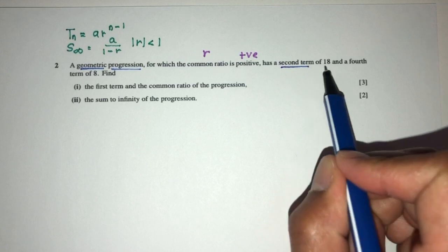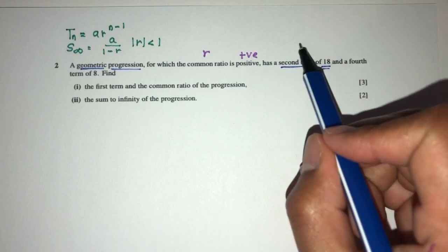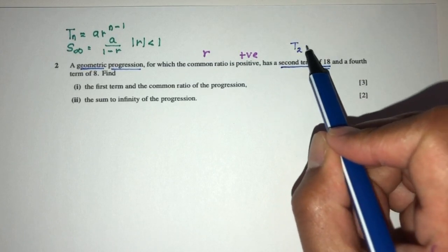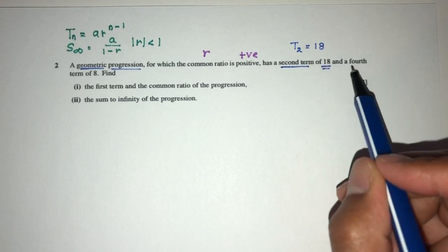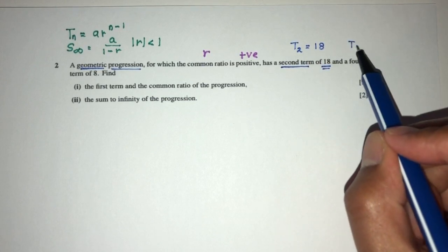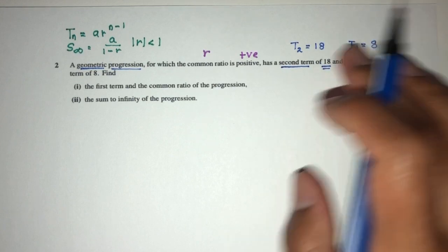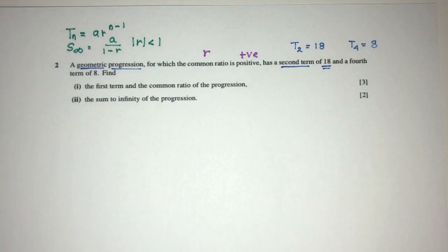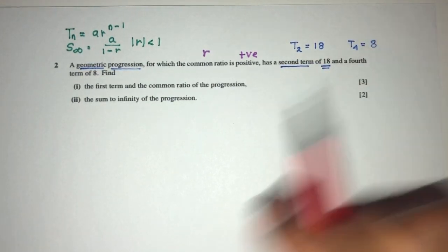Here we have the second term is 18. So, second term, t2, that will be 18. And the fourth term, t4, that will be the value of 8. So, we have these two as given information. So, using these information, part one, we have to find the first term,